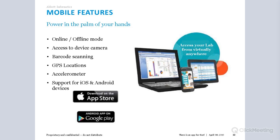StarLIMS itself is a website, requiring a stable internet connection to access from a computer. However, the StarLIMS mobile solution contains applications specifically designed for activities where the user might not have a stable network connection, such as in the field collecting samples. The basic operation mode of these apps is: first, download the necessary data from StarLIMS whilst online; second, perform site activities and manipulate data whilst offline; and third, upload data back to StarLIMS when an online connection is available. It is important to note that StarLIMS mobile applications are accessible from both Apple and Android devices and can be downloaded from the respective app stores.